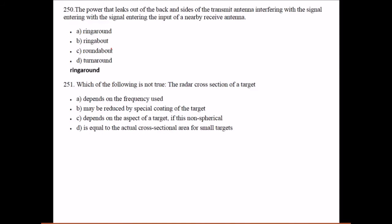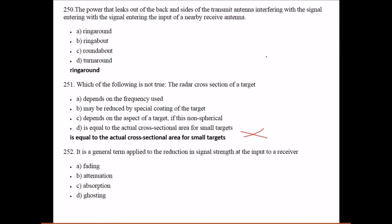The power that leaks out of the back and sides of the transmit antenna, interfering with the signal entering the input of the nearby receiving antenna, is ring around. Which of the following is not true? The radar cross-section of a target is equal to the actual cross-sectional area of a small target - it is not.